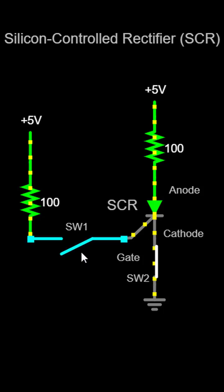However, when a pulse of current or voltage is applied to the gate terminal, it triggers the SCR to turn on and conduct current until the current falls below a certain threshold.